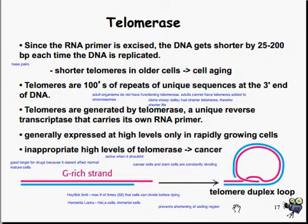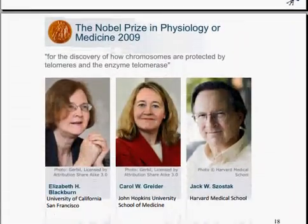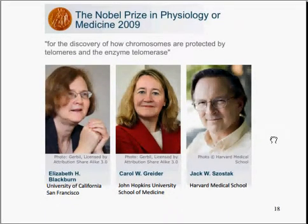HeLa cells are immortal cells that don't have a shortening effect in the coding region, and they've been used in labs all over the world — somewhat controversially, because the woman's family did not give permission for her cells to be used that way. This also brings us to the Hayflick limit, which is the maximum number of times a cell can divide before dying under normal circumstances — 50 times is the maximum. Some researchers won Nobel Prizes for the discovery of how chromosomes are protected by telomeres and enzymes.